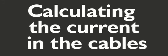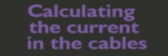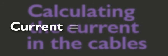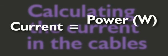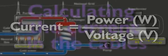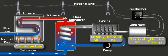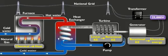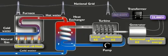Calculating the current in the cables: the current flowing in the cables can be calculated using the equation — current equals power (watts) divided by voltage (volts). The electrical energy is generated at the power station at 25,000 volts and stepped up to 400,000 volts by the transformer.